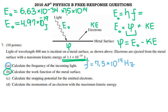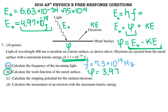Now, taking the photon energy and subtracting the given kinetic energy of 1.1×10⁻¹⁹ joules, the work function equals 3.87×10⁻¹⁹ joules.